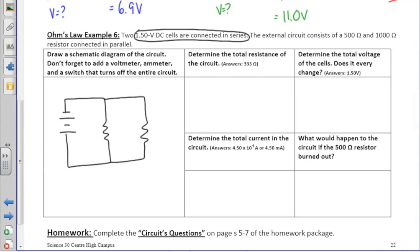Remember to always label information given in the question into our picture. Because there are two 1.5 volt batteries, we must add the two voltages together, or two times 1.5, which gives us a total voltage of 3.0 volts. Our first resistor has a resistance of 500 ohms, and the second resistor has a resistance of 1,000 ohms.